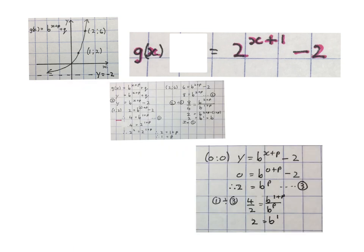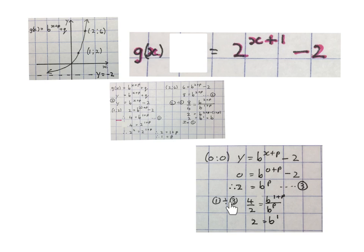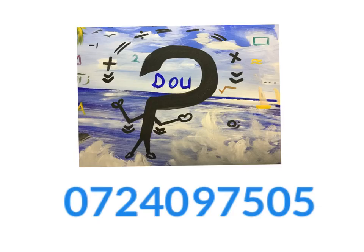Something extra some of you may have noticed: this graph also goes through the origin, meaning it passes through the coordinate (0, 0). You could have taken (0, 0), substituted it into the formula with the asymptote already in place, and simplified to get 2 = b^p — a third equation. Then you could have used equations 1 and 3 together, or 2 and 3 together — your choice. Any one divided by the other would have given you the value of b. Please like or dislike the video and subscribe to the channel.